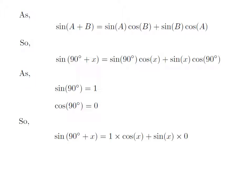So, we got sine of 90 degree plus x is equal to 1 into cosine of x plus sine of x into 0.